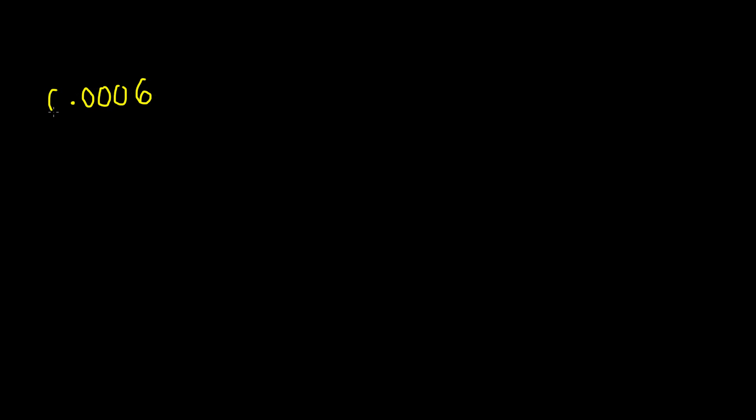In this case, we have three zeros in front of the 6. These do not affect how we're going to solve this. The zero before the decimal point does not matter, since it doesn't have any value. So we're going to do this the exact same way.